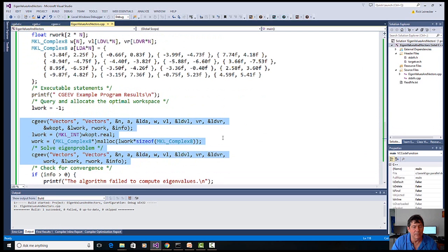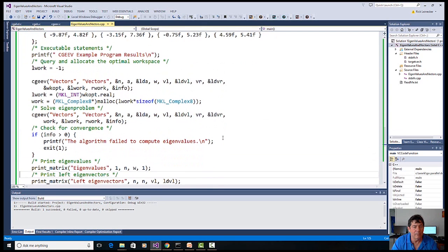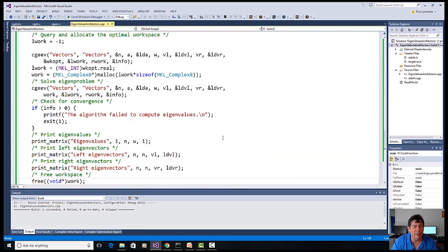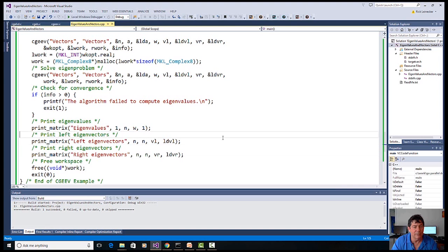We calculate the vectors, check for an error, and simply print out the results. Let's see if we can run this thing now.